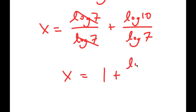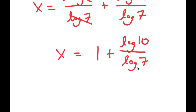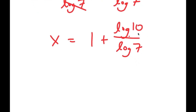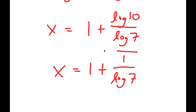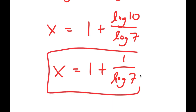Log 7 over log 7 cancels out, so I get x is equal to 1 plus log 10 over log 7. And since log base 10 of 10 equals 1, I get x is equal to 1 plus 1 over log 7. And this is my answer.